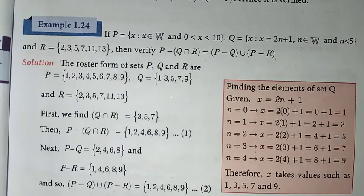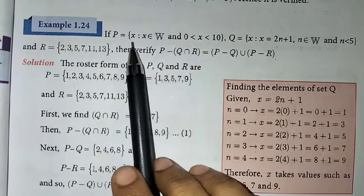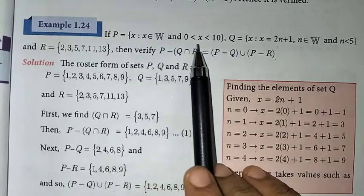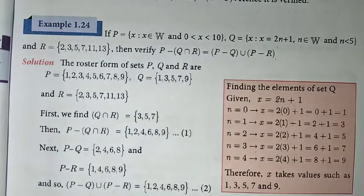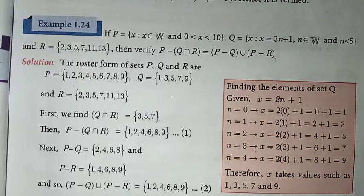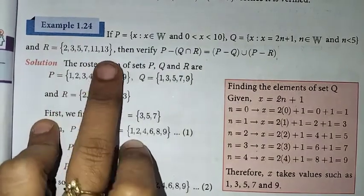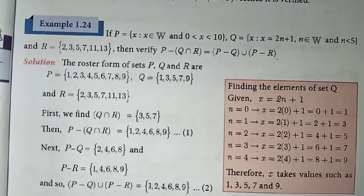In this problem, if P is equal to the set of all x such that x belongs to whole numbers and 0 less than x less than 10, and Q is equal to x such that x equals 2n plus 1, where n belongs to whole numbers and n is less than 5, and R is the set of prime numbers, we have to get the roster form and set builder form.